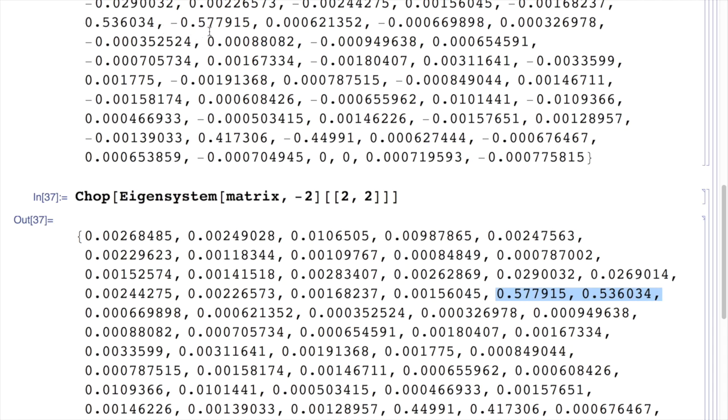So it's 0.53 minus 0.57 plus 0.57 plus 0.53. These are two factors that are essentially of the same length, but perpendicular to each other.